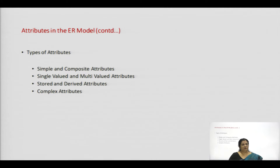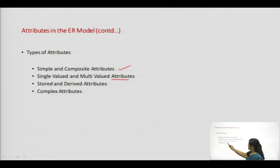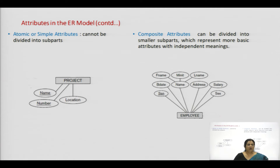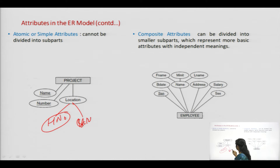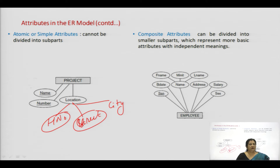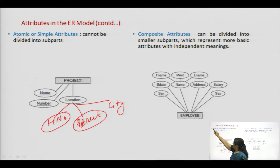There are different categories of attributes in the ER model: simple and composite attributes, single-valued and multi-valued attributes, stored and derived attributes, and complex attributes. A simple or atomic attribute is one which cannot be divided into sub-parts. For example, if I divide the attribute 'location' into sub-parts like house number, street, and city, it is no longer a simple attribute because it has been divided into sub-parts. A simple attribute cannot be defined into sub-parts — it is an atomic attribute with no sub-parts.